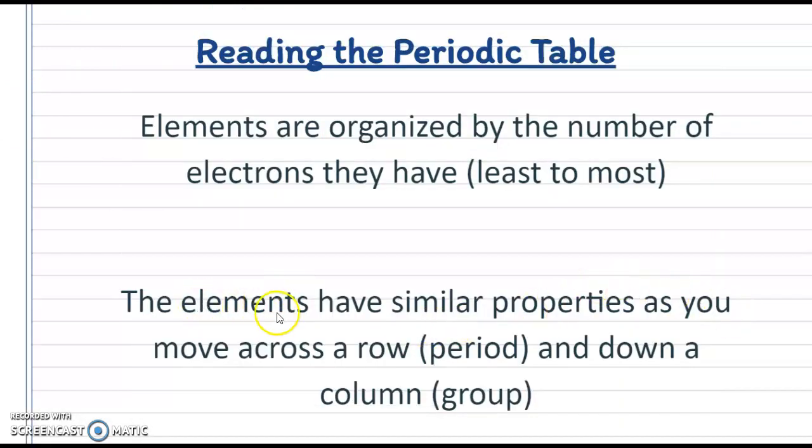And these elements, they are grouped not only by size like that electron number, but also they have similar properties as you move across a row which is called a period, or down a column which is called a group.